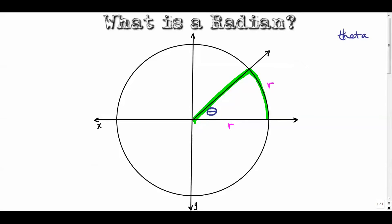That scenario is the only scenario where we can talk about a radian. The radian is the angle measure that describes this scenario. In other words, one radian is equal to the angle that it takes for the arc to be exactly the same as the radius of the circle.